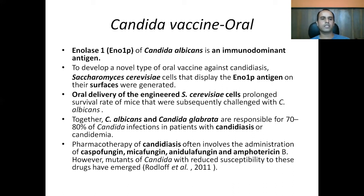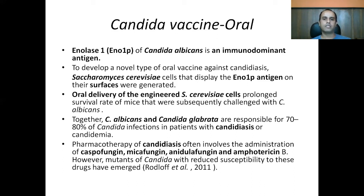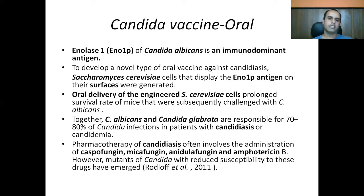Candida vaccine: Candida albicans express the immunodominant antigen Enolase 1 (Eno1p) on their surfaces. Engineered Saccharomyces cerevisiae cells expressing this antigen have been shown to prolong survival in mice given Candida albicans and Candida glabrata together. Candida albicans and C. glabrata are responsible for 70–80% of Candida infections in patients with candidiasis and candidemia. Due to rising resistance, the search for vaccines has started. Drugs currently used for candidiasis include caspofungin, micafungin, anidulafungin, amphotericin B, and azole drugs.